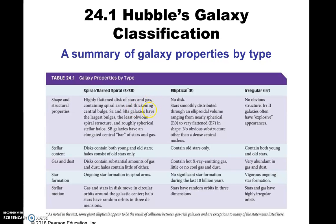The SAs and SBAs have the largest nuclear bulge, and they have the least spiral structure — roughly spherical. The SBAs have an elongated bar.